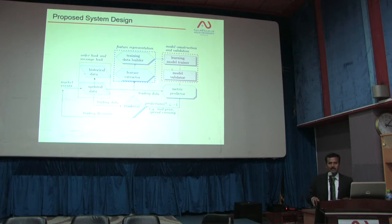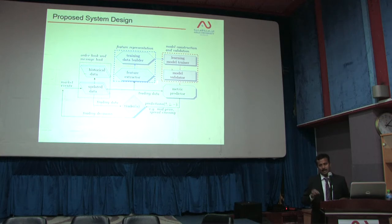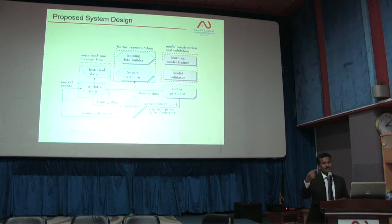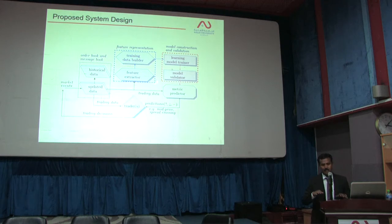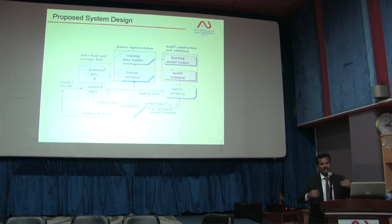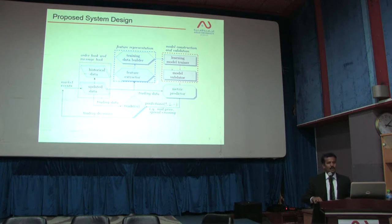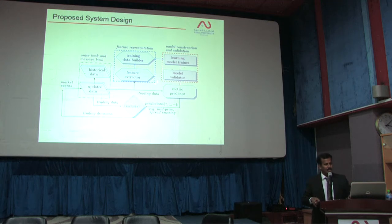This is the proposed system design. The historical data of a particular company — currently focusing on only one company — already existing in the stock market is considered. Updated data refers to what is updated today or at a particular time, since many people access the stock market. The data has been considered to build the training dataset, and a test dataset will also be considered. The model will be learned using predictive methods mentioned in the other slides.